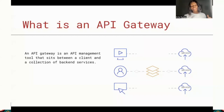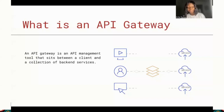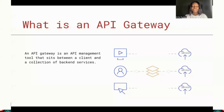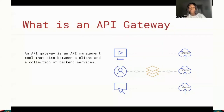An API gateway offers a lot of features such as observability, monitoring, logging, and analytics. It takes care of cache management, stabilizing, and load balancing. It also handles authentication, security, and policy enforcement. It can also take care of service discovery and the basic business logic that goes on within your application. The API gateway actually does all of this.